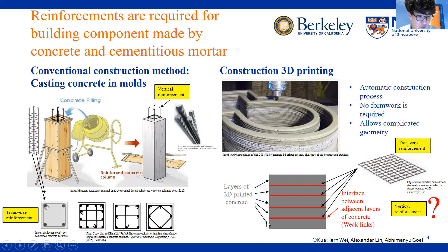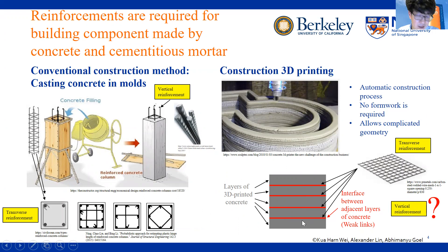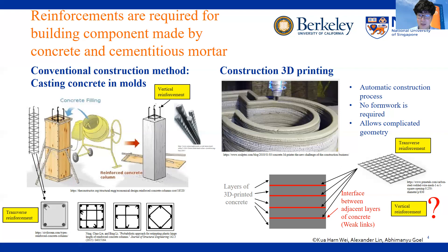Because if we print concrete layer by layer, it is relatively easy to locate the transverse reinforcement. However, if you have a vertical steel reinforcement on the reinforcement cage, after you print the first layer of concrete, the vertical component of the steel reinforcement will actually block the moving path of your concrete printing nozzle. So in this case, it is difficult to locate the three-dimensional reinforcement in your 3D printed concrete.